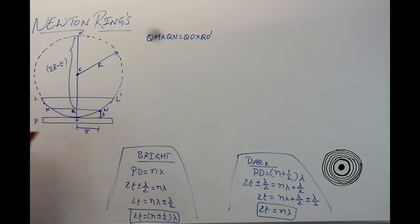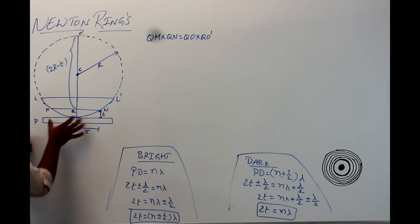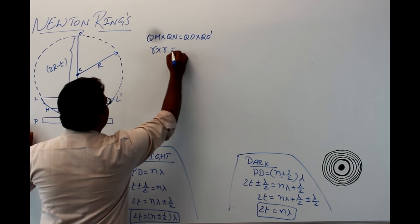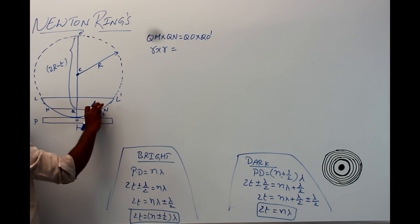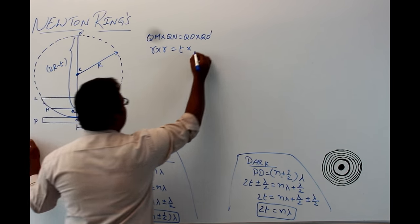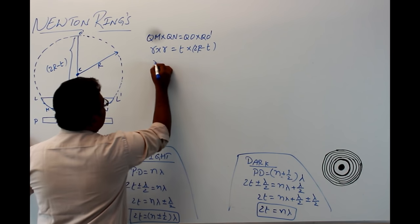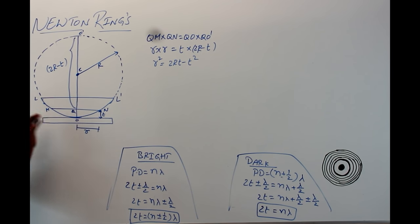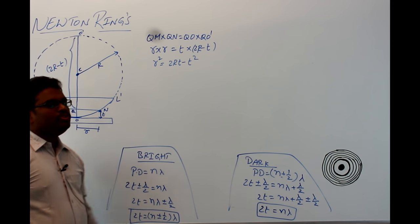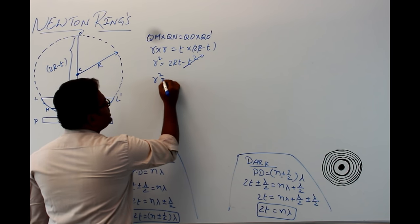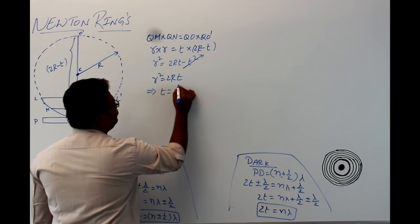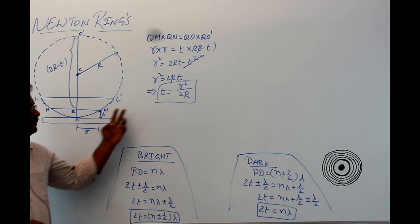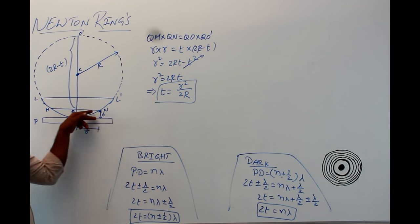Since t is a very thin film, t² is negligibly small and can be neglected. So r² = 2Rt, which implies t = r²/2R, where small r is the radius of the ring and capital R is the radius of curvature of the plano-convex lens.